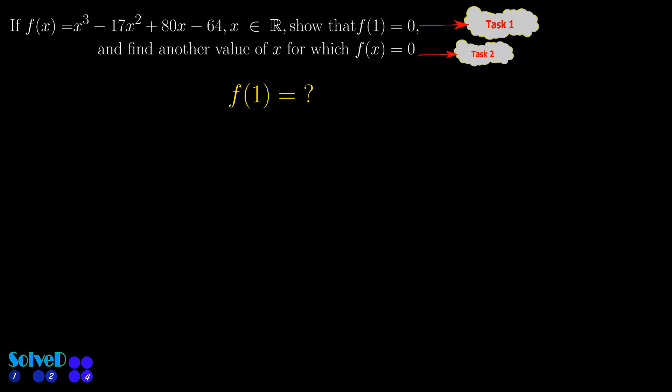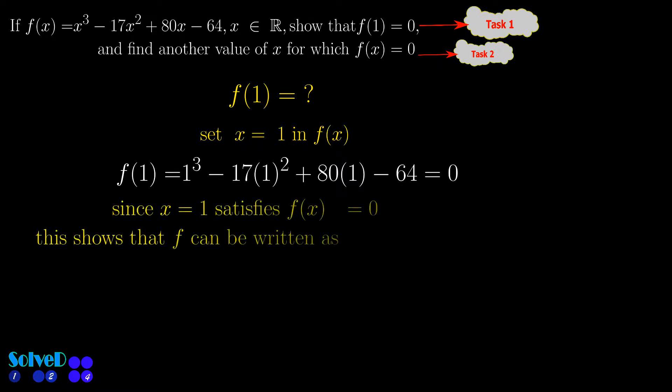Task 1 is to set x equals 1 in the given equation and check if this returns 0. Since the function is 0 at x equals 1, this means that x minus 1 is one of the factors of the given function.